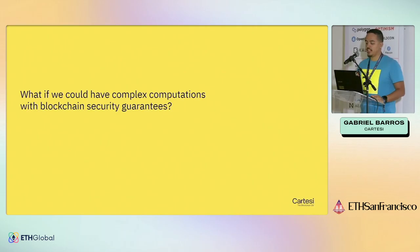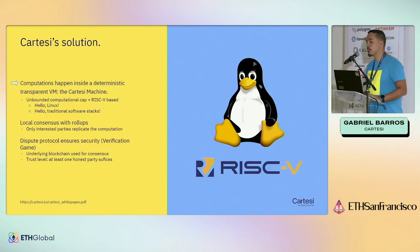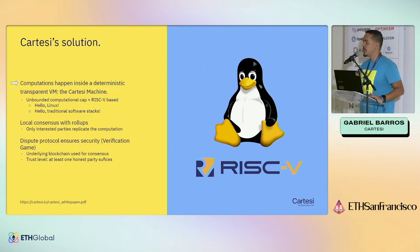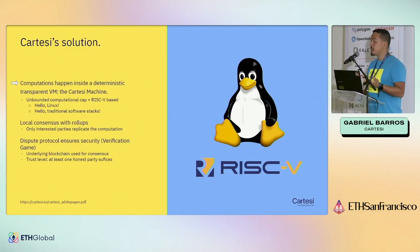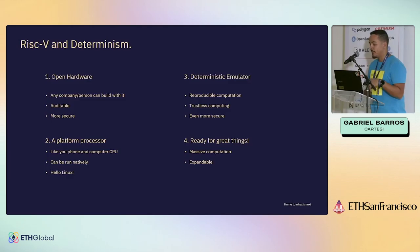So the main idea is: what if we could have complex computation inside a blockchain and maintain security guarantees? The Cartesi solution is a transparent VM. Instead of being another EVM-based network, a sidechain, or even a rollup, we have a RISC-V emulator. RISC-V is an instruction set for a general purpose processor, just like the ones in your computer or your phone. You can think of it like a Docker machine or a VirtualBox of sorts, and we made it deterministic.